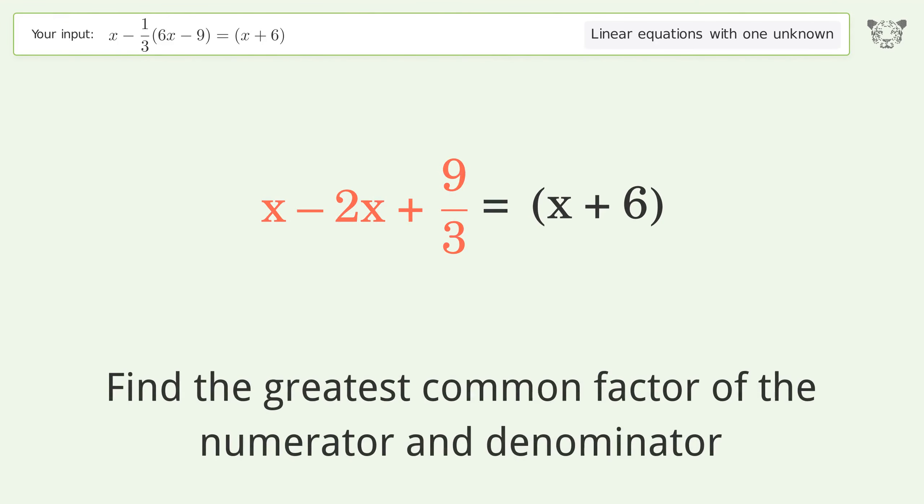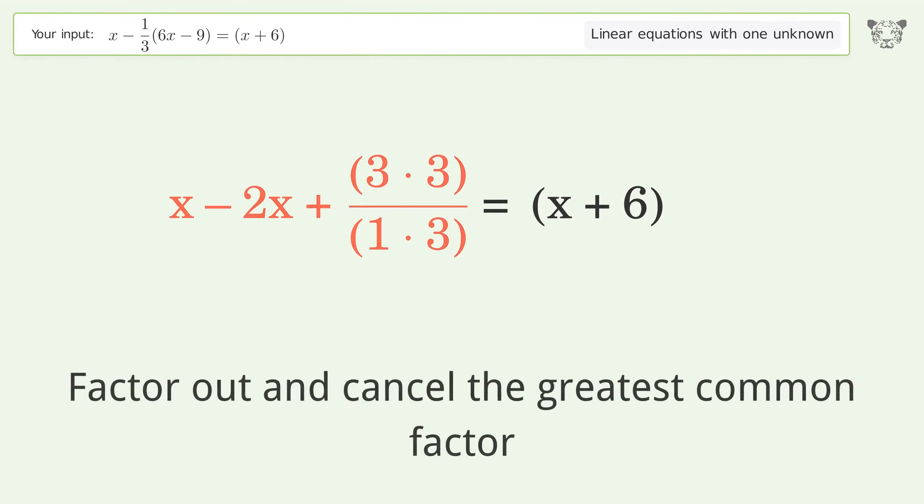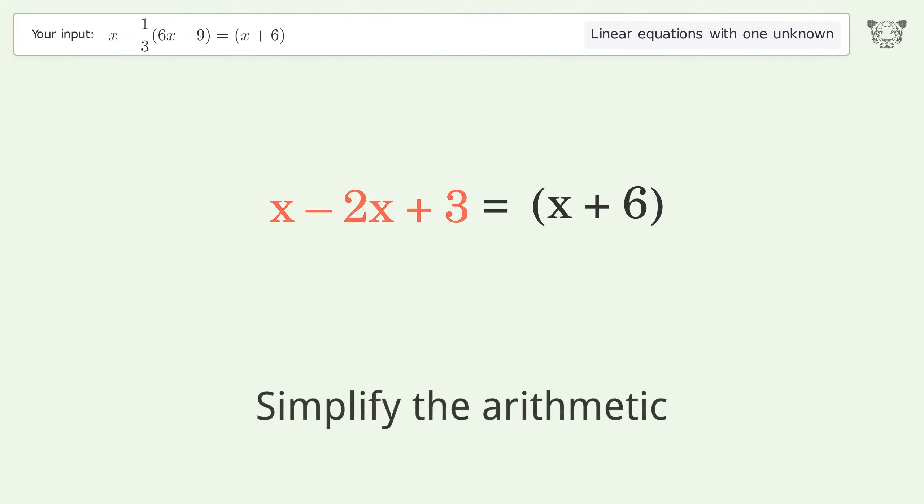Find the greatest common factor of the numerator and denominator. Factor out and cancel the greatest common factor. Simplify the arithmetic.